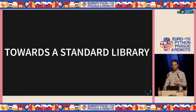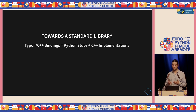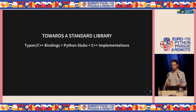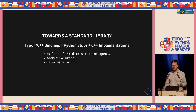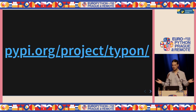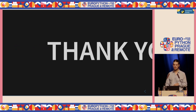Finally, towards a standard library: the idea is to have Typen C++ bindings using C++ implementations and Python stubs that tell the Typen compiler how to call the C++ code. This is necessary to avoid the global interpreter lock. So far we've implemented most built-ins, the socket API, and parts of the OS API — but it's a work in progress and there will be lots more to do. The project is now available on PyPI with a first release — look it up if you want. Thank you for listening.